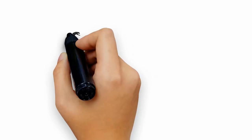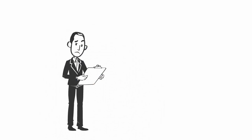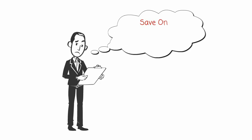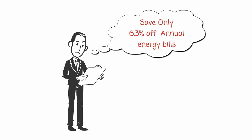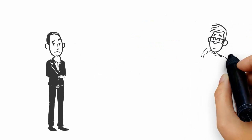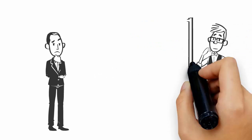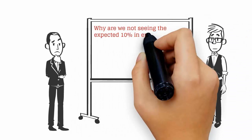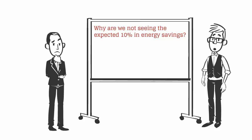Now, a year after all these projects have been completed, John is a bit confused. Looking at his bills from his utility company, John has only seen a reduction of about 6.3% in his annual energy usage. John would like to understand, after all this expense, why he is not seeing the 10% reduction in energy use he expected.